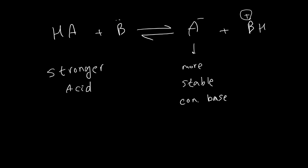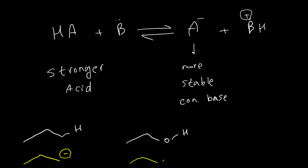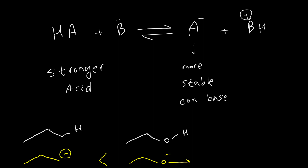We can also discuss the first effect based on this. If we take propane and ethanol, their conjugate bases after deprotonation are these anions. The second anion is more stable because the negative charge is on a more electronegative atom — oxygen. It's better to have a negative charge on a more electronegative atom, so this anion is more stable. As a result, ethanol is more acidic. This is the first parameter in the acidity of a molecule.